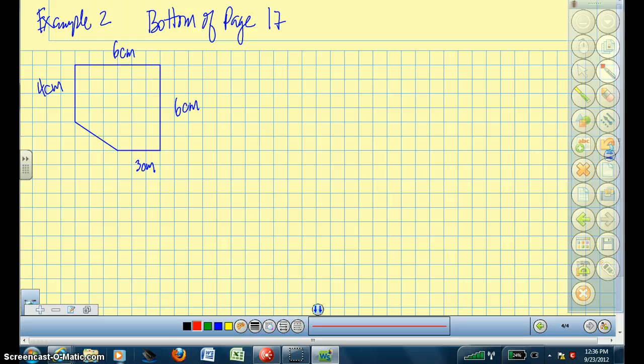Now I want to look at the example at the bottom of page 17. And we have this composite shape. It looks like almost a square, but not quite. What we have to do in this instance is we actually have to complete this shape, like so, so that it's almost like we're dealing with a complete square.